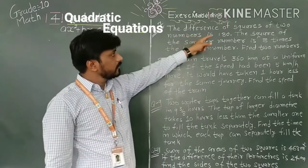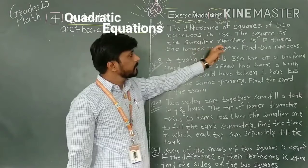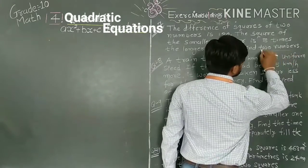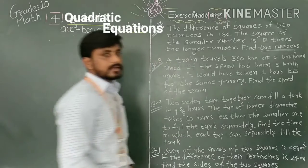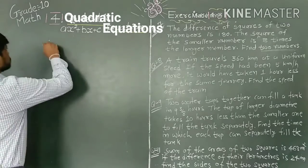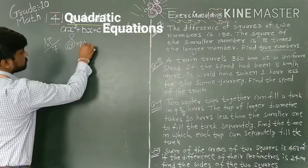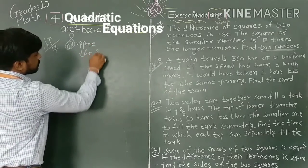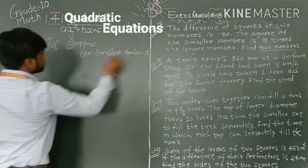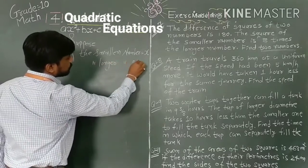The difference of squares of 2 numbers is 180. The square of the smaller number is 8 times the larger number. We want to find these 2 numbers. Let the smaller number be equal to x and the larger number be equal to y.